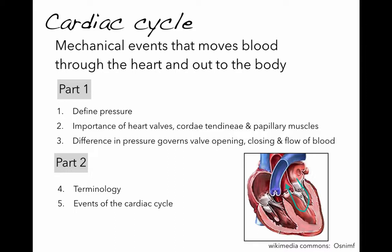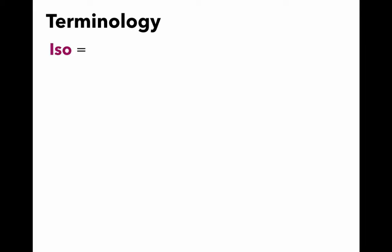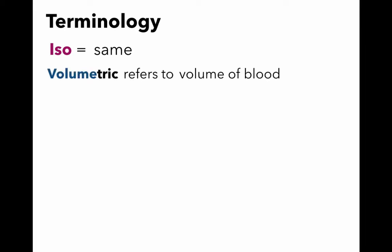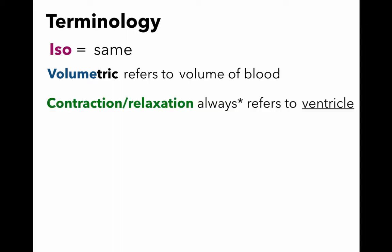Before we start, I'm going to go over a little bit of terminology. The cardiac cycle are the mechanical events that move blood through the heart and out to the body. I'm going to go through a couple of key terms that usually throw students off because they sound so foreign. ISO means same. Volumetric refers to volume — that is, the volume of blood.